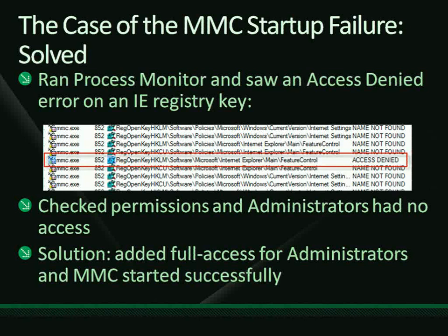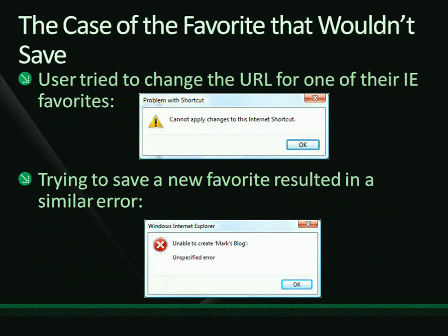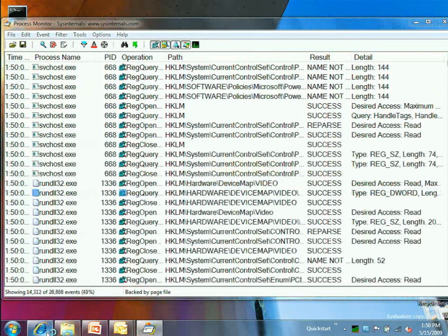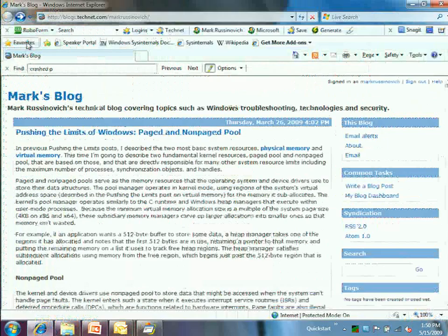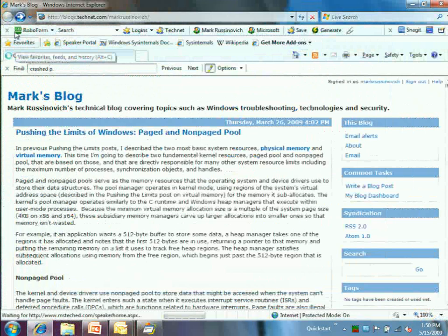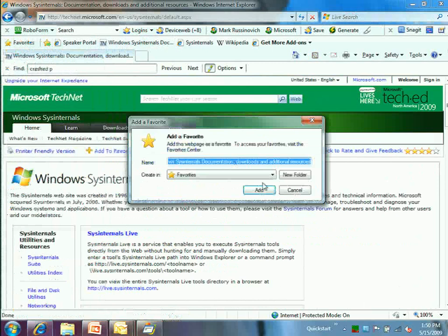Another case sent in a couple of months ago: a user on Vista using Internet Explorer 7 tried to save or edit an IE favorite and got 'Cannot apply changes to this Internet Shortcut.' They also got an error when trying to save a new favorite. Let me recreate that scenario live: fire up Process Monitor, go into IE, try to add a site to favorites — and we get 'Unspecified error.'